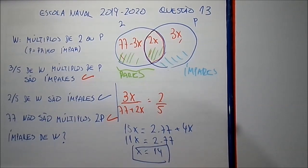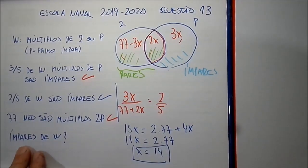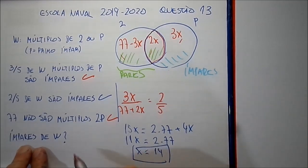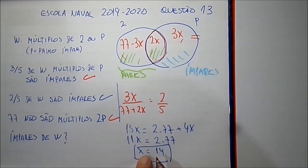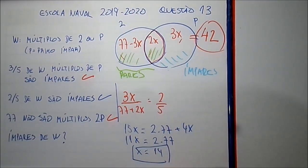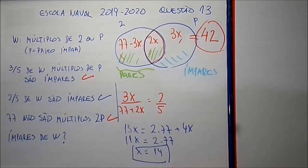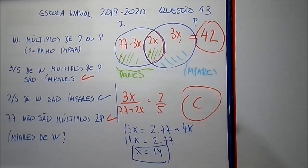Cuidado — leia agora o que o problema pergunta. A quantidade de elementos de W que são ímpares é um número múltiplo de quê? Os elementos de W que são ímpares são 3x. Se x é 14, então 3x dá 42. Essa é a quantidade de elementos de W que são ímpares: 42. Isso aí é múltiplo de 7 — não é de 4, não é de 5, não é de 9, nem de 11. Então a resposta certa é 7, letra C de Charlie.